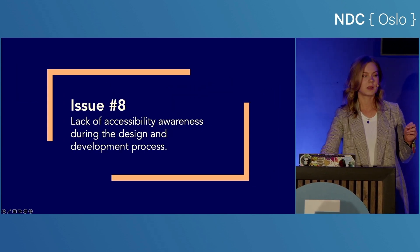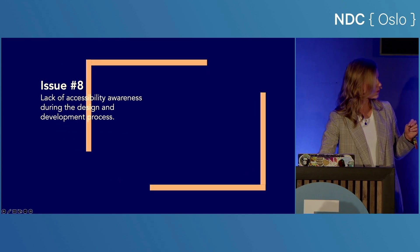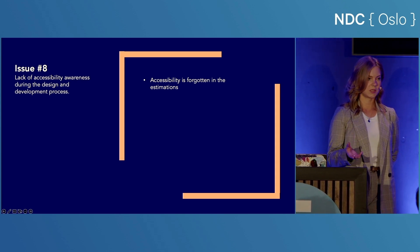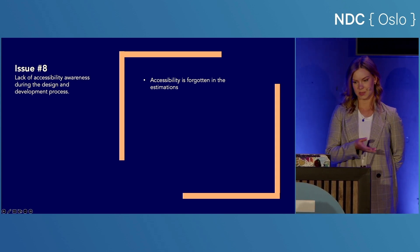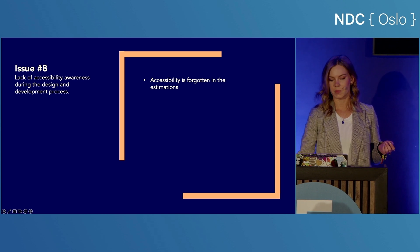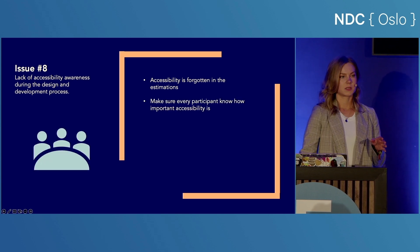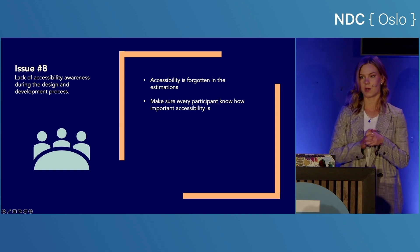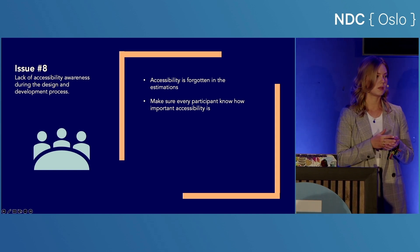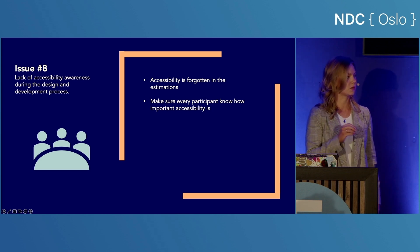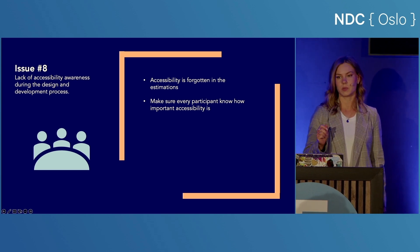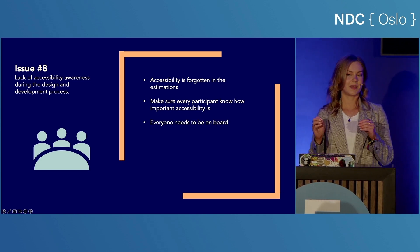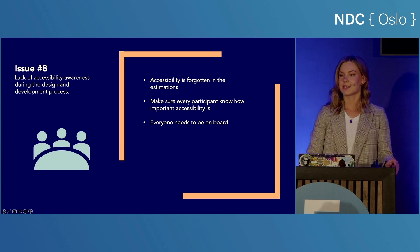Issue number eight: lack of accessibility awareness during the design and development process. Developers tend to forget about accessibility when they estimate, and when development has started it's too late to incorporate it because there isn't enough time. Take responsibility and focus on accessibility already in the planning process. Make sure every participant knows how important this is — the customer, the designer, the developer, the editor who will publish content on the web app. Everyone needs to be on board. However, wanting to focus on it doesn't necessarily mean everyone knows how to.